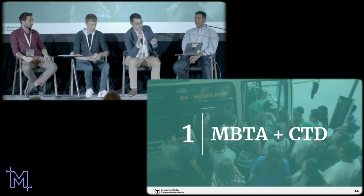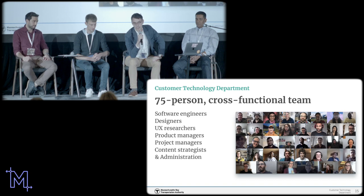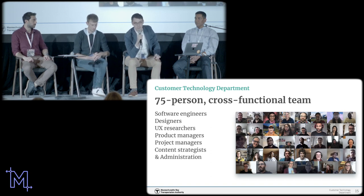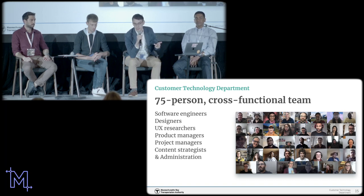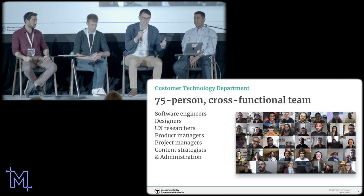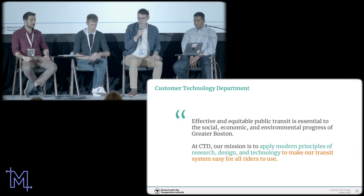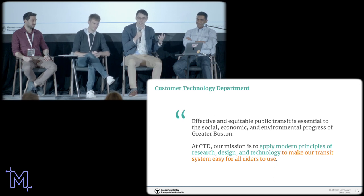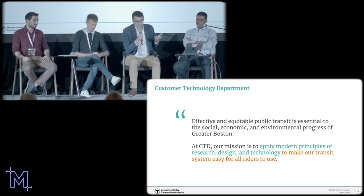To explain why we built Skate, I want to first talk about what my group does at the MBTA. We're called the Customer Technology Department — a 75-person cross-functional technology team with software engineers, designers, UX researchers, and product managers in-house. It's pretty unusual for a large public transit agency in the U.S. to have staff that large, but we are one of the largest transit agencies, so we have these resources. Our mission is to apply technology best practices to the problems our Boston-region riders have, to make our system easy for all riders to use.